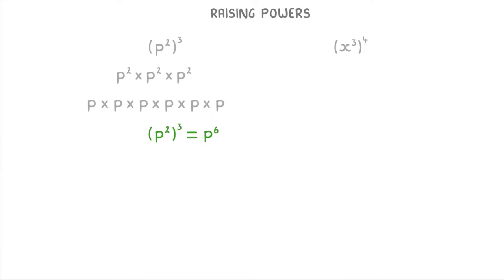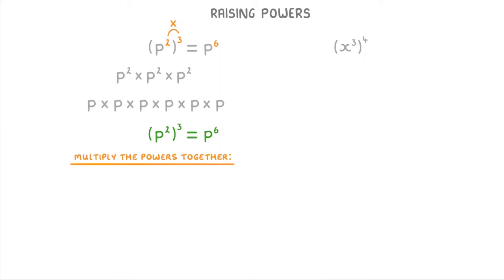Now that's the theory behind what's going on here, but in exams we can actually use a shortcut to figure this out more quickly. All we have to do is multiply the two powers together. So here we'd multiply the 2 by the 3 to get 6. In your workings, a good way to show that is: p squared to the power of 3 equals p to the power of 2 times 3, so p to the power of 6.